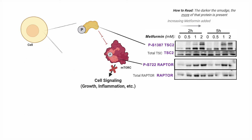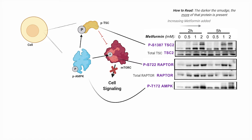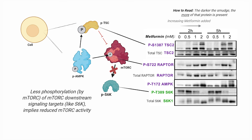Here we see increasing levels of raptor phosphorylation with the addition of metformin concentration. Finally, checking in on our AMPK master protein, which is known to phosphorylate both TSC and raptor, we see a rise in phospho-AMPK — or activated AMPK — with increasing metformin. If we take a quick peek at one of the mTOR downstream proteins that facilitates cell growth when it is phosphorylated by mTOR, we can see it experiences decreases in phosphorylation with increasing metformin.